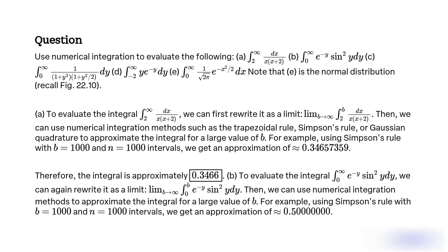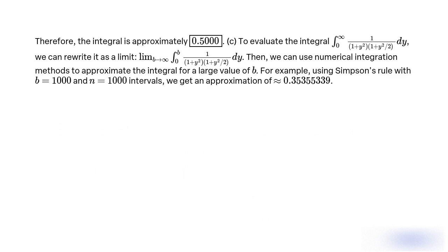For example, using Simpson's rule with b = 1,000 and n = 1,000 intervals, we get an approximation of 0.5000. Therefore, the integral is approximately 0.5000.